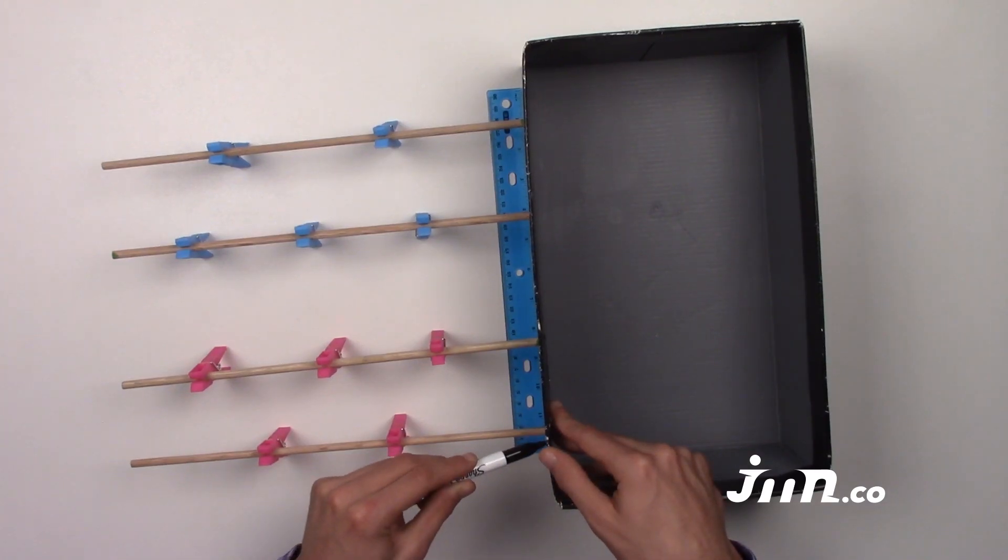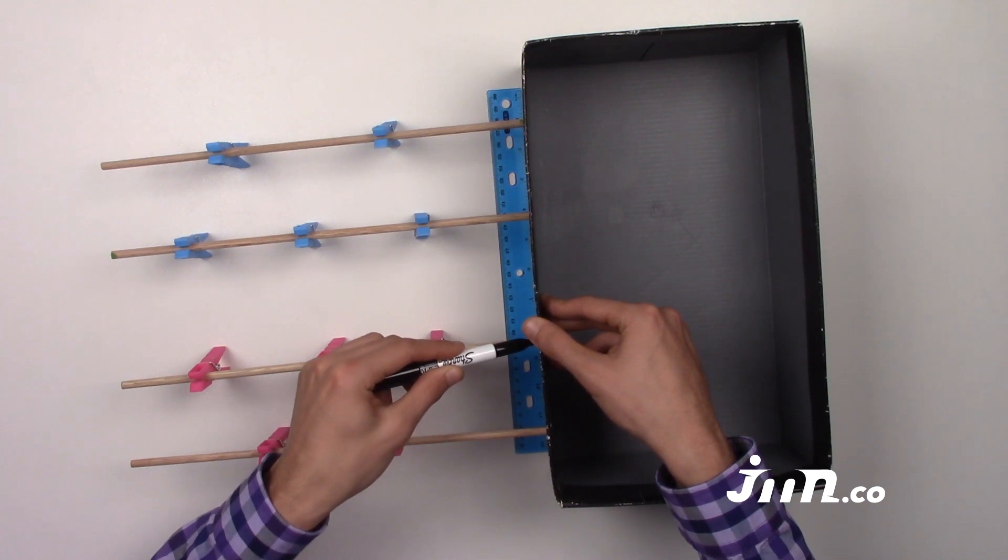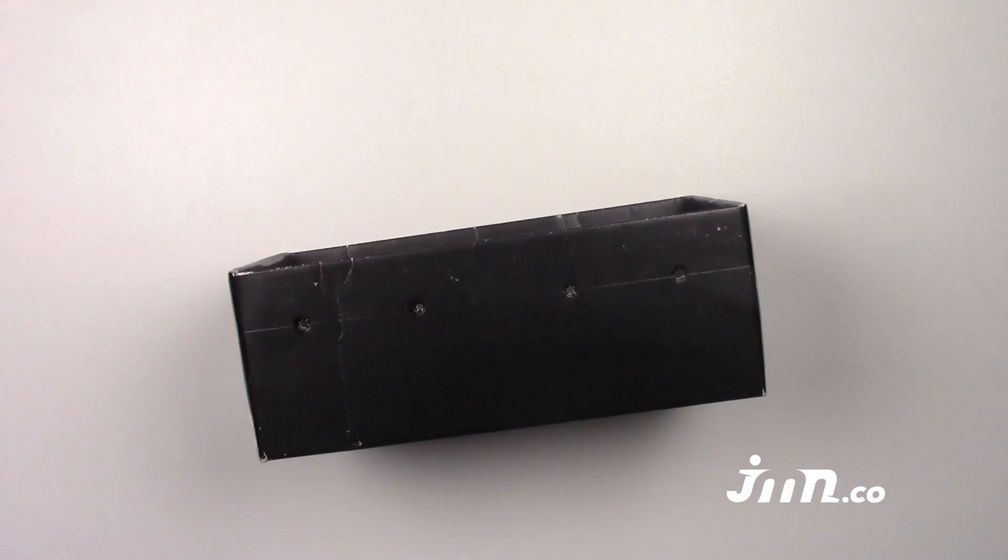Step 5: Measure where each of the sticks will go and make a mark for where the holes should be. Step 6: Ask an adult to make the holes on each side of the box.